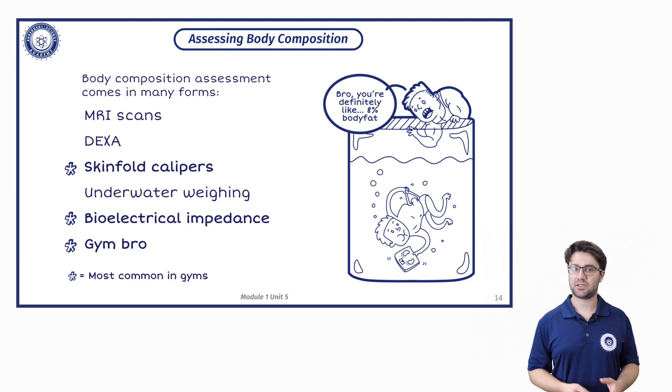Body composition assessment comes in many forms. The stars on the slide that you'll see denote what's most commonly found in gyms or in personal training studios. You have MRI scans and DEXA scans. Both of these require going to some form of facility and lying down for a while while the machine scans you effectively. They're usually quite expensive as well.